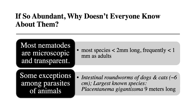Most people don't know about nematode species because of their small size — most are less than two millimeters long as adults, so without a microscope you can't easily see them. The exception are certain ones that are parasites of animals. For example, one type of intestinal roundworm from dogs and cats is about six centimeters in length, easily seen if excreted by the dog. And the largest nematode we know of is a parasite of whales and is about nine meters in length.